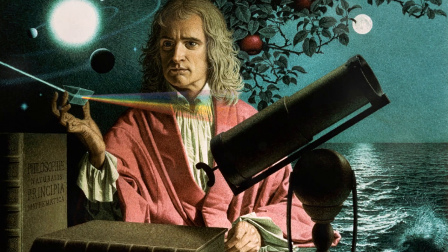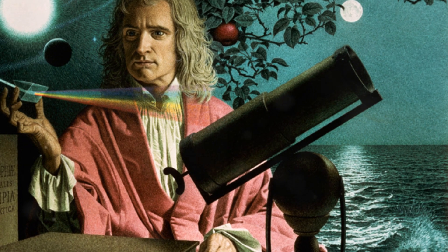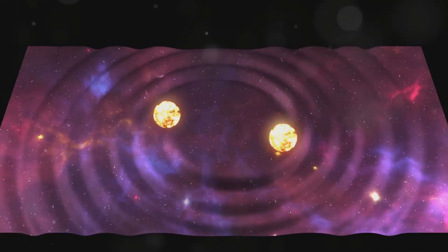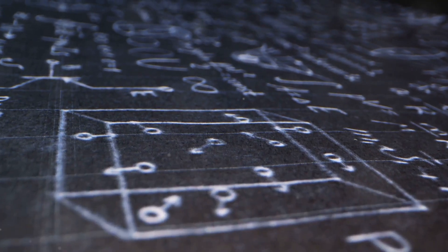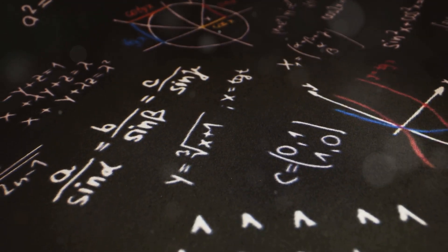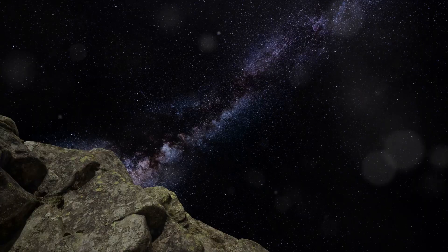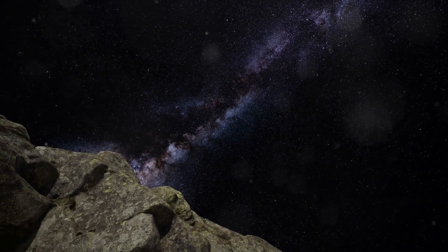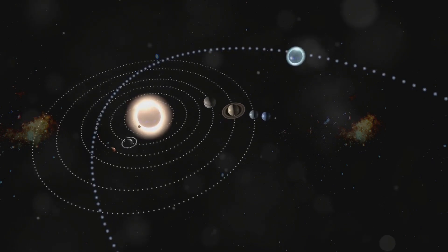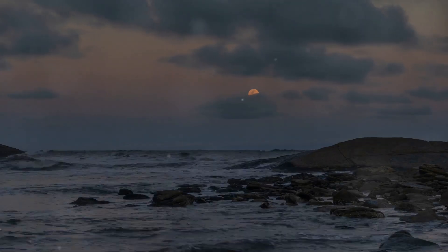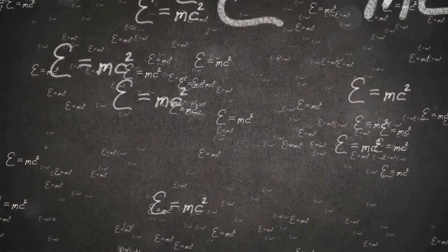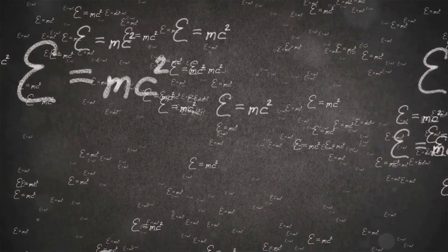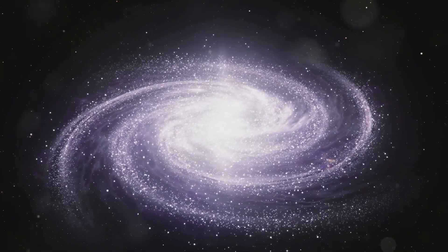Sir Isaac Newton, an English physicist and mathematician, revolutionized our understanding of gravity. He developed the law of universal gravitation, which explained the force governing the motion of celestial bodies. Newton's mathematical framework allowed scientists to calculate the gravitational force between any two objects. With Newton's laws, astronomers could accurately predict the motion of planets and explain the tides caused by the moon's gravitational pull on Earth's oceans. His work laid the foundation for classical mechanics and is still used today to describe the motion of planets, stars, and galaxies.